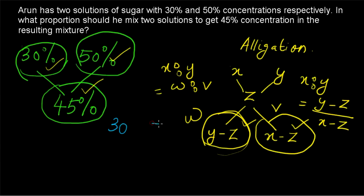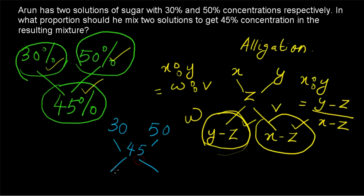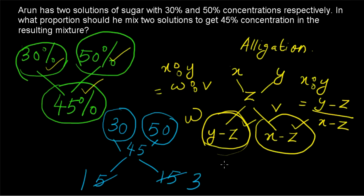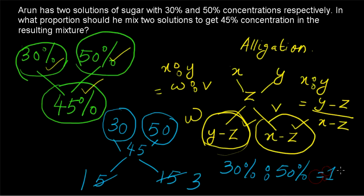Applying the same rule here: 30% is combined with 50% to get 45%. The difference between 45 and 50 is 5, and the difference between 30 and 45 is 15. Simplifying 5 to 15, we get 1 to 3. So the proportion in which the 30% sugar solution should be mixed with the 50% sugar solution is 1 to 3.